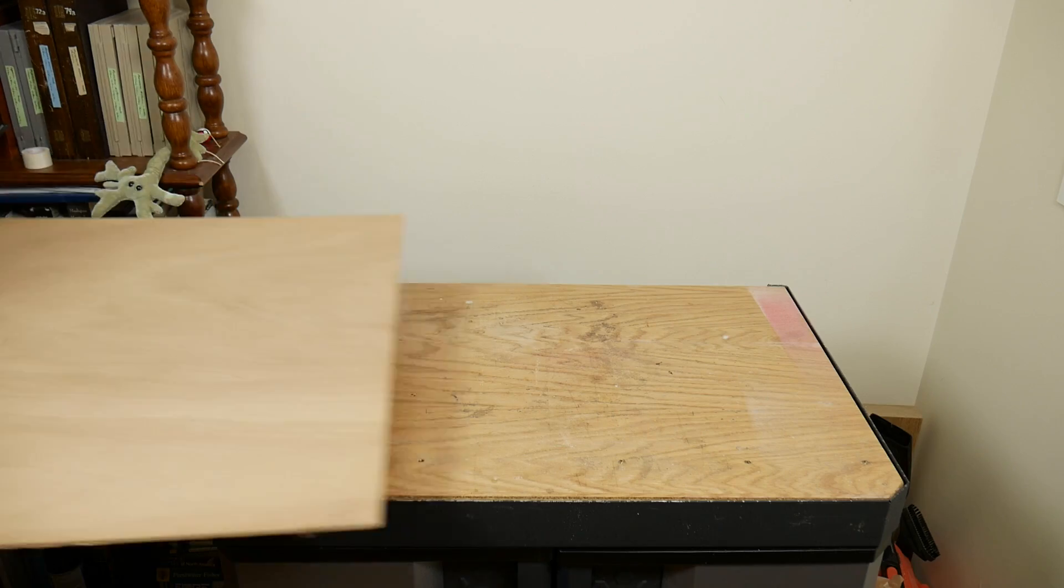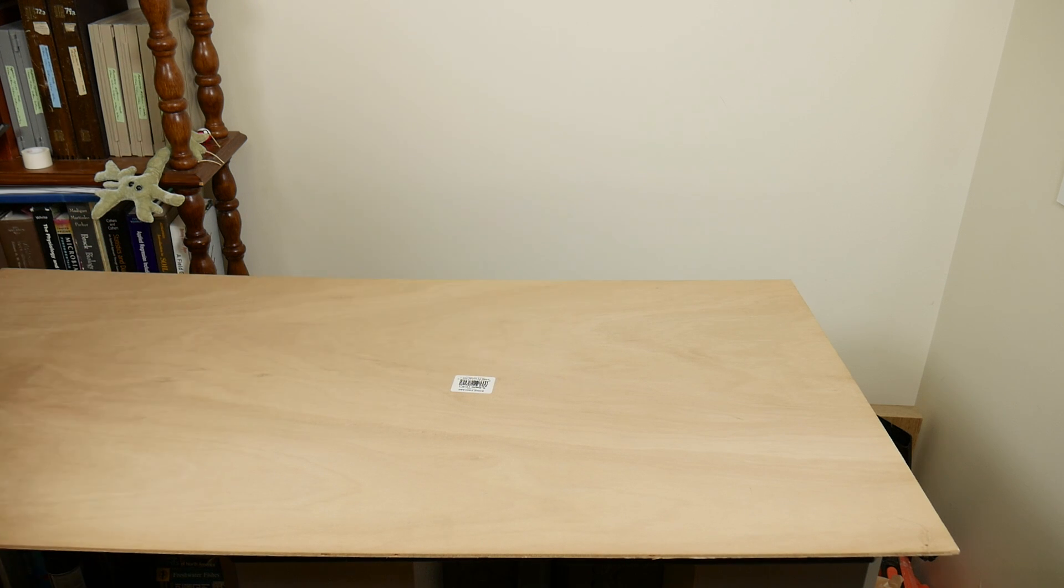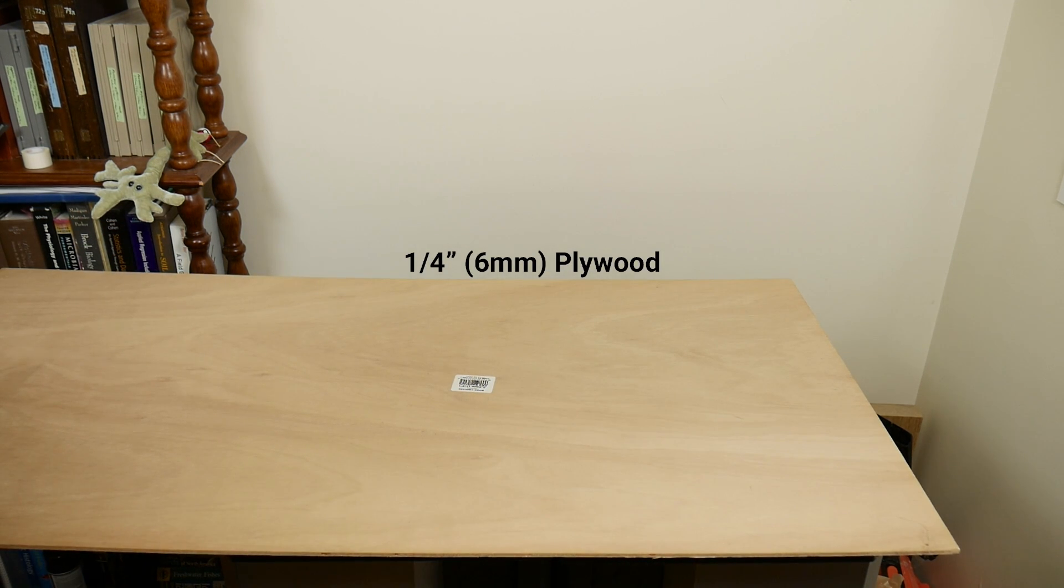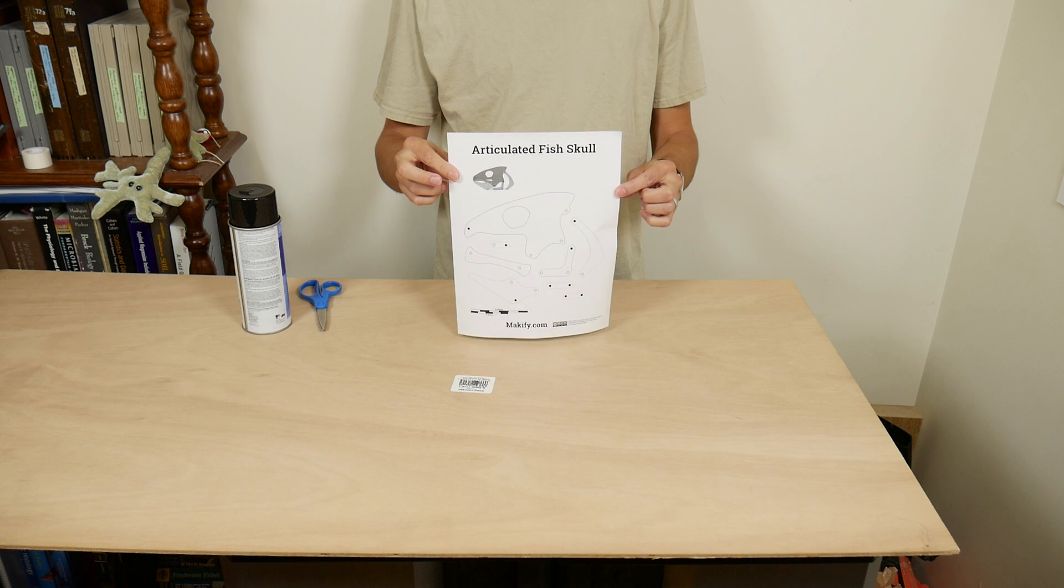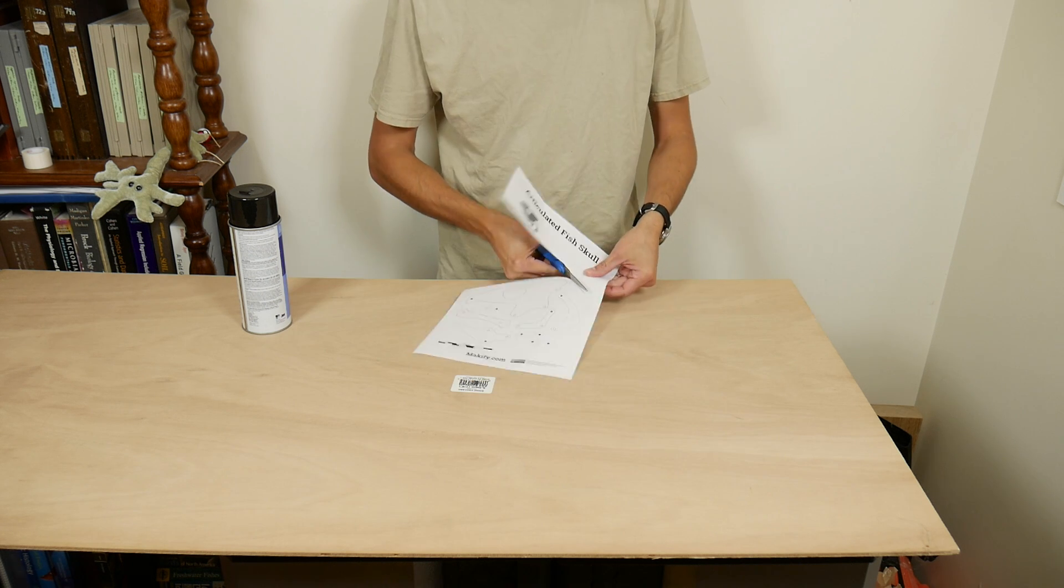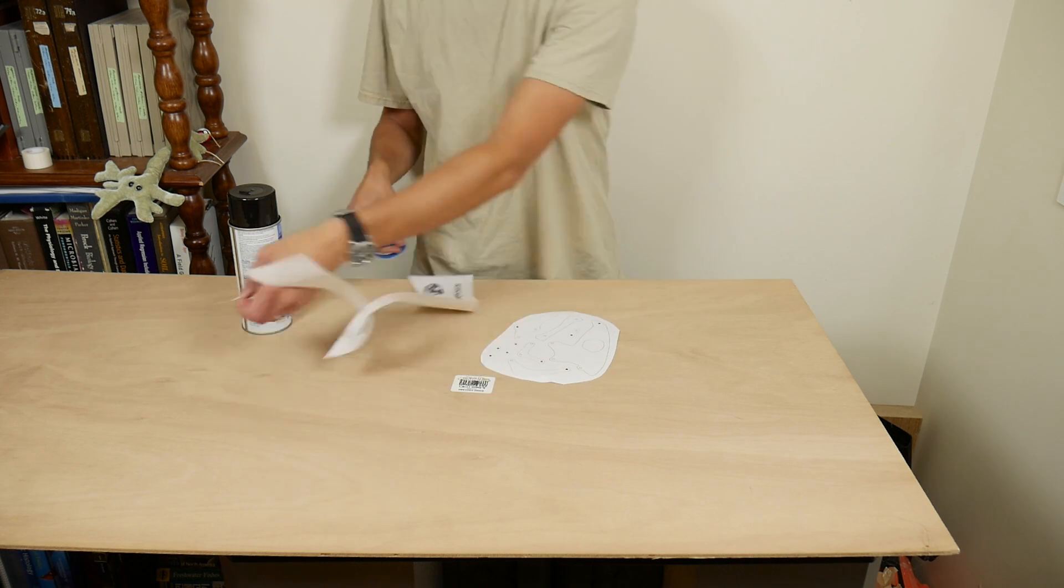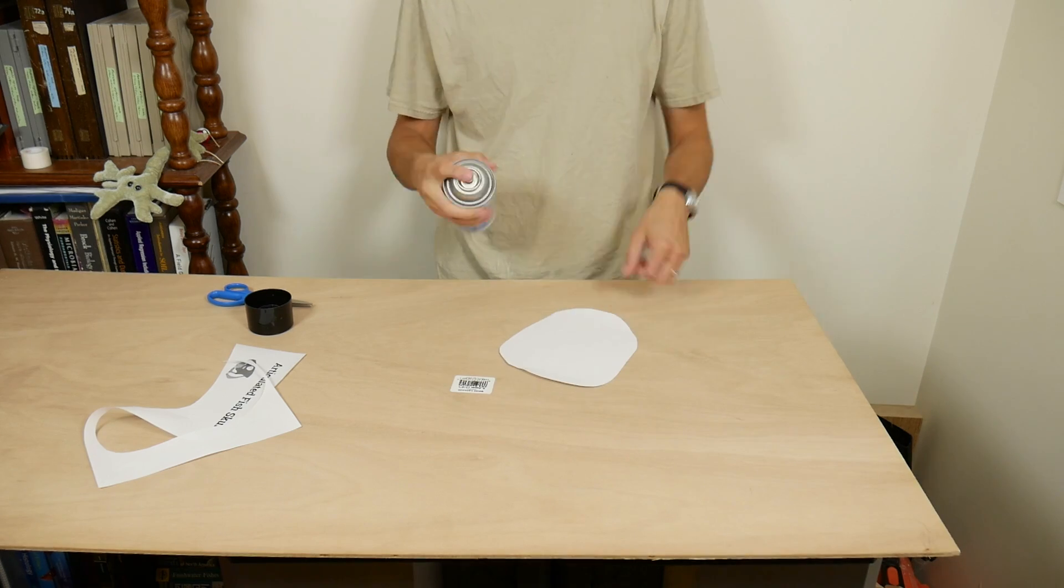Now back to the build. The pieces of the skull were cut out from a sheet of one quarter inch plywood that I salvaged from a dumpster. I designed all the parts on the computer and printed out a template. You can download this template for free, link below. I used spray adhesive to stick the template to the plywood.